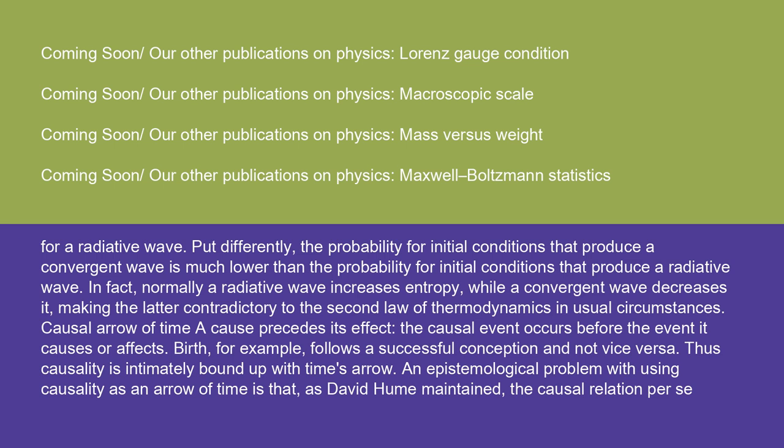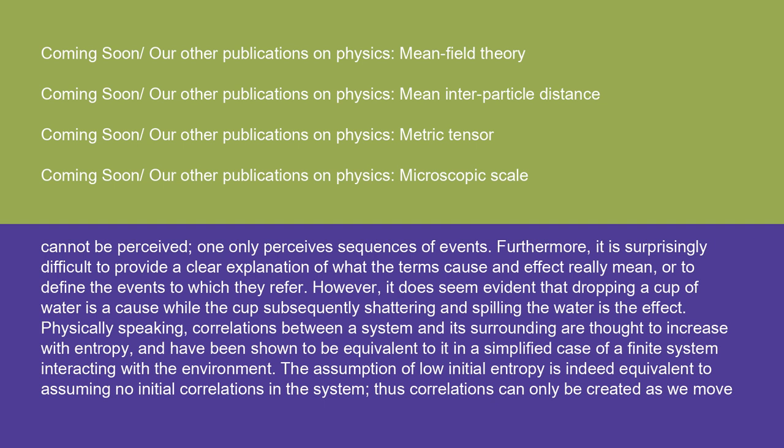A cause precedes its effect — the causal event occurs before the event it causes or affects. Birth, for example, follows a successful conception and not vice versa. Thus causality is intimately bound up with time's arrow. An epistemological problem with using causality as an arrow of time is that, as David Hume maintained, the causal relation per se cannot be perceived — one only perceives sequences of events. Furthermore, it is surprisingly difficult to provide a clear explanation of what the terms cause and effect really mean, or to define the events to which they refer.